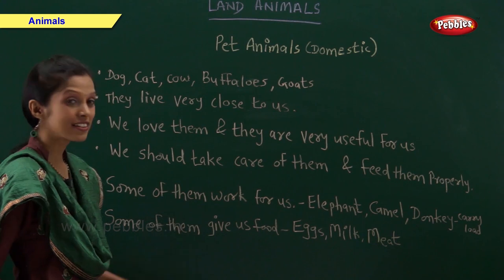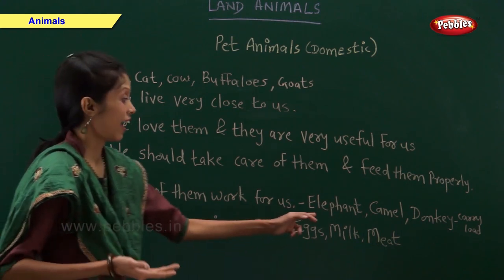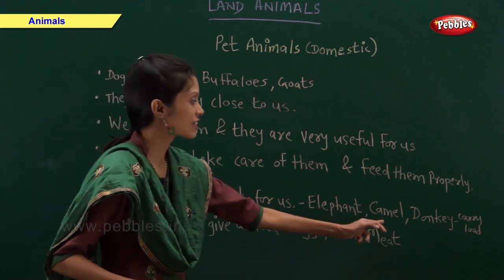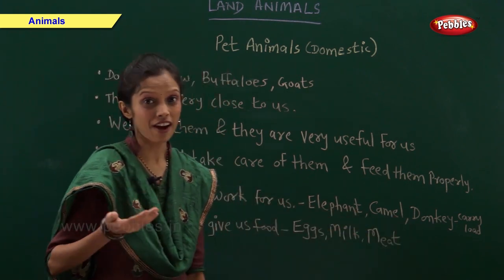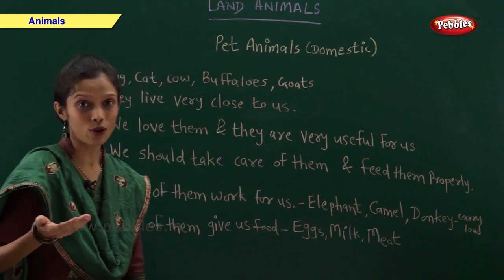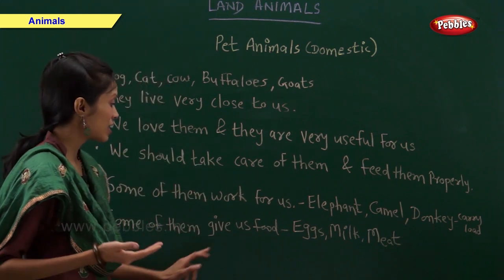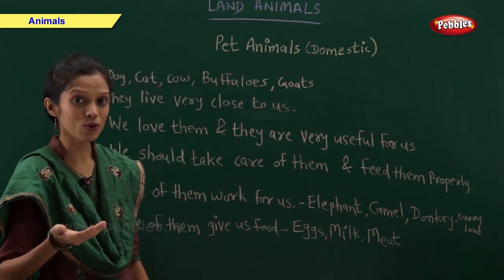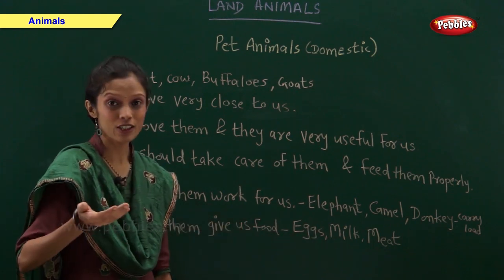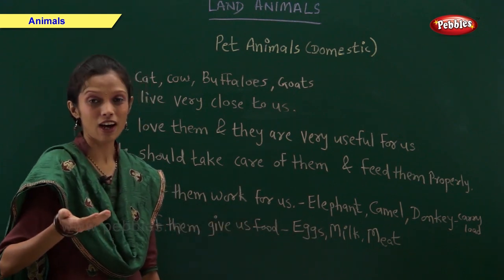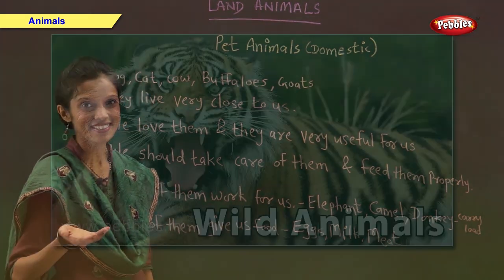Some animals even work for us. Elephant, camel, and donkey carry our load. And some animals give us food like eggs, milk and meat. So they are called domestic animals.